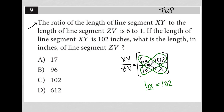I can then divide both sides by 6. The 6 cancels out, giving me X equals 102 divided by 6. I go to my calculator — let's see, open my calculator up — and 102 divided by 6 gives me 17. So my correct answer is choice A: 17.